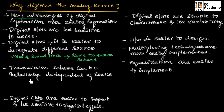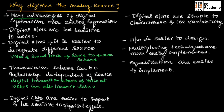The transmission scheme can be relatively independent of the sources. For example, a digital transmission scheme that transmits voice at 10 kbps can also transmit computer data at 10 kbps. So, whether the source is voice or data, the digital transmission scheme remains the same — it is relatively independent of the type of source being transmitted.